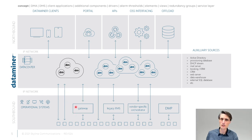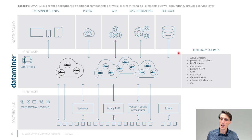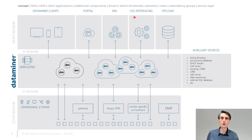If it's legacy equipment, we can use gateways — industry standard hardware for IO contacts, serial ports, or medium conversion. We can also connect to legacy element management systems or vendor-specific orchestrators. A DMP — DataMiner probe — is a special case for remote sites where a standalone probe collects local information and transfers consolidated data to a central system. Eastbound, we can integrate with auxiliary sources like DHCP, mail, booking CRM, web servers, and external data warehousing.